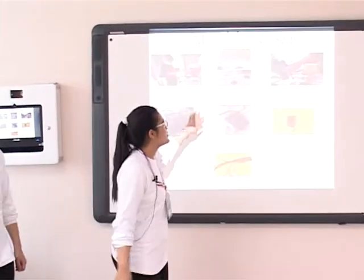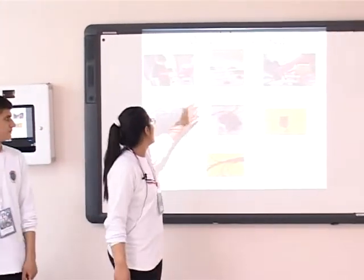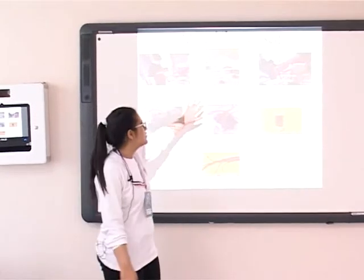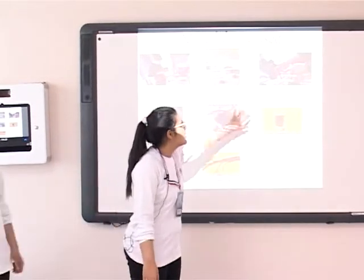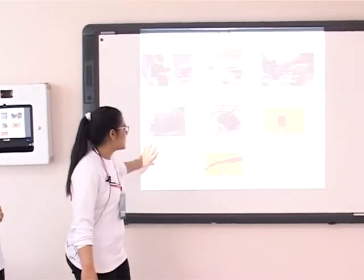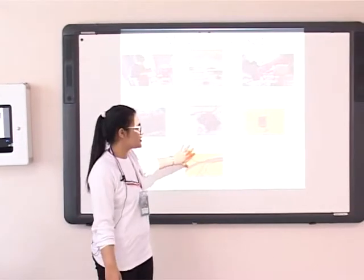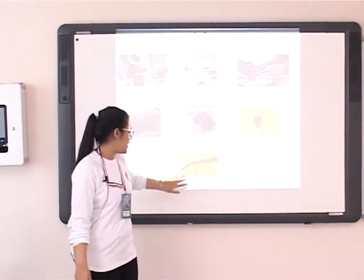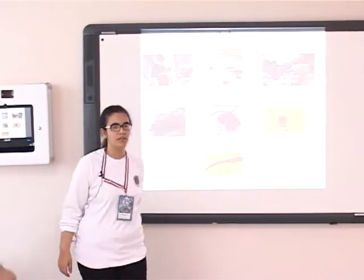The materials we used in this project are: two traffic lights, two bases, ten timers, eight relays, one receiver, two senders, and conducting wires.